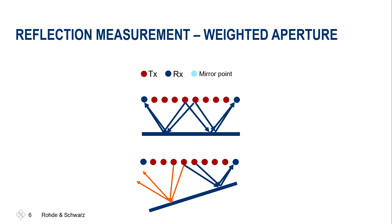We have the transmit antennas and the receive antennas here — this is a two-dimensional image. In order to simplify, we also have the three-dimensional case later, but let us start with two dimensions. We have the transmit antennas, the receive antennas, and if the plate is completely plain, then we have the reflections as shown here above.